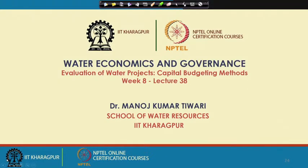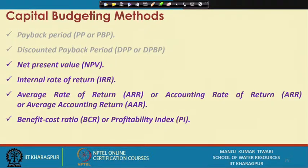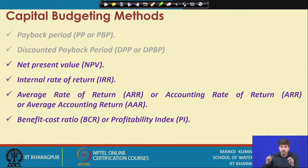Hi everyone. In the earlier sessions this week we have been talking about the evaluation of water projects in terms of economic feasibility and we were discussing the various capital budgeting methods. We did talk about a couple of methods in the previous session: the payback period, which is one of the very basic capital budgeting techniques, and then the discounted payback period, which is a step further in order to consider the time value of money. One of the major drawbacks of the payback period is that it does not consider the time value of money, and in order to overcome that, a discounted payback period method was devised, which we also discussed in the previous session.